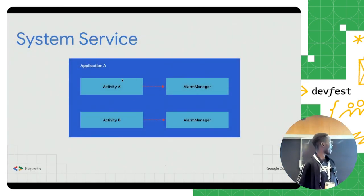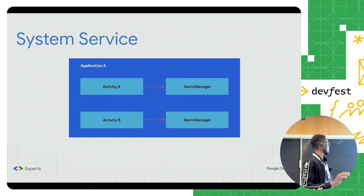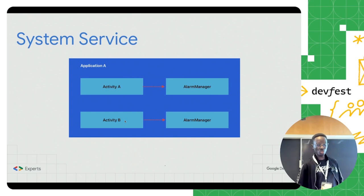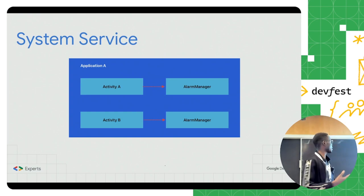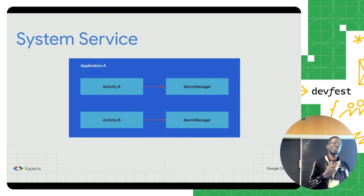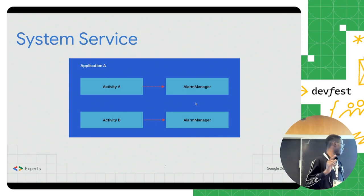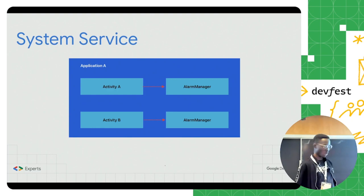It's also possible to have an architecture where inside the same application you have two activities: the first one accesses the alarm manager, and the second activity also accesses the same manager. In this case, you will have two instances of the alarm manager, but both managers will have access to the single instance of the underlying service.